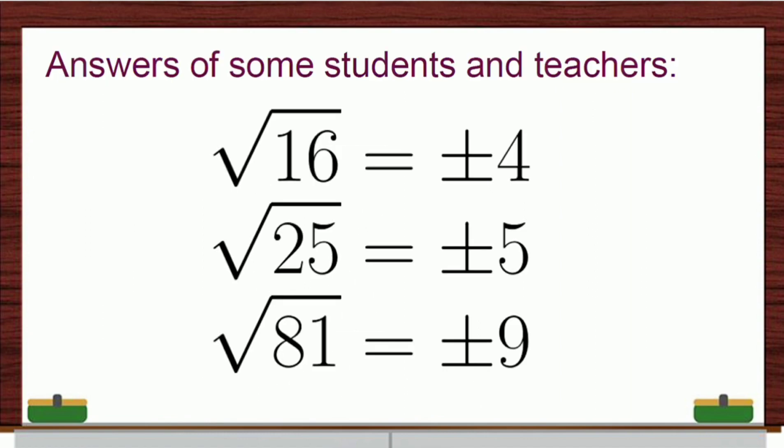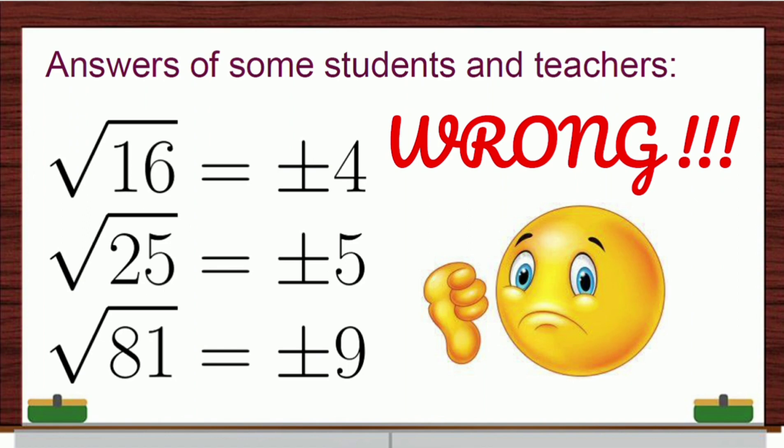And some students and teachers gave these answers. For instance, the radical of 16, for them, it's positive 4 and negative 4. Similarly, radical of 25, their answer is positive 5 and negative 5. And for radical of 81, positive 9 and negative 9. At first glance, it seems to be true because in the first place as math teacher, we often read this as square root. So, we pronounce it as square root of 16, positive 4 and negative 4. But actually, these answers are wrong.